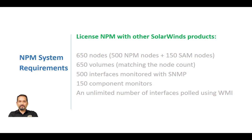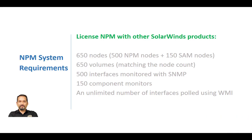Your NPM license interacts additionally with your other SolarWinds products. For example, if you have an NPM SL 500 license, which monitors 500 nodes and volumes, combined with a SAM, or Server Application Monitor, AL 150 license, you can monitor 600 nodes in total — 500 for NPM and 150 for SAM, or Server Application Monitoring.